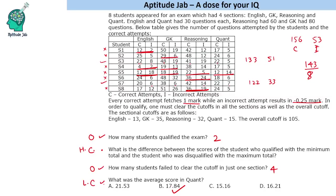Now the heavy calculation question: what is the difference between the score of the student who qualified with the minimum total and the student who was disqualified with the maximum total? The minimum qualifying total is S3 — score is total correct minus 8.25 from incorrect, giving 113.75. Now we need to find which disqualified student had the maximum total. Looking at totals: 62+42=104, 121 correct, 54+102=126 correct — let's check further.